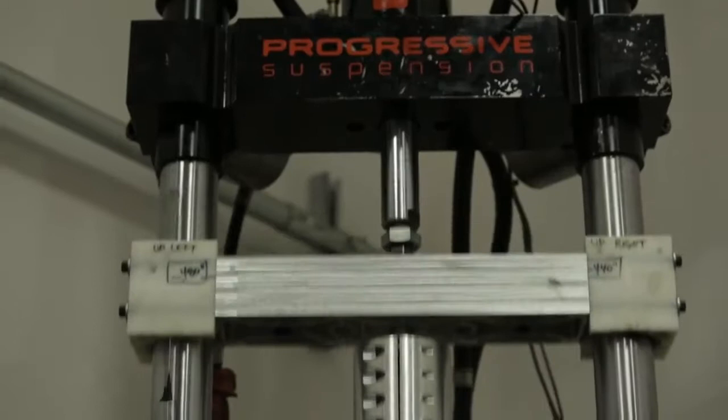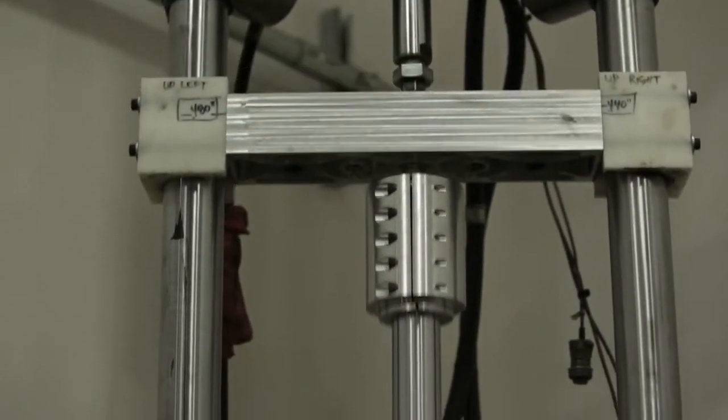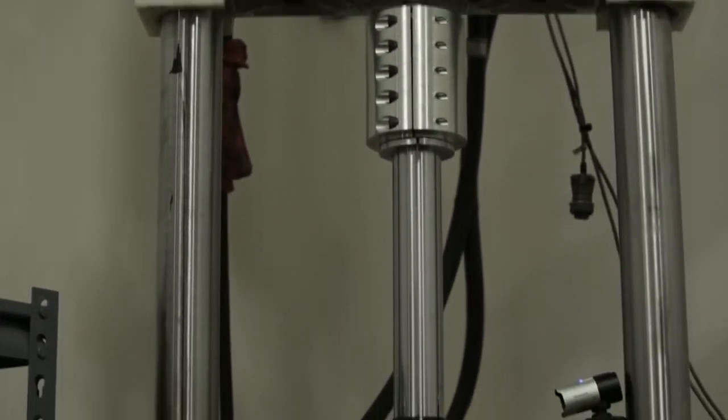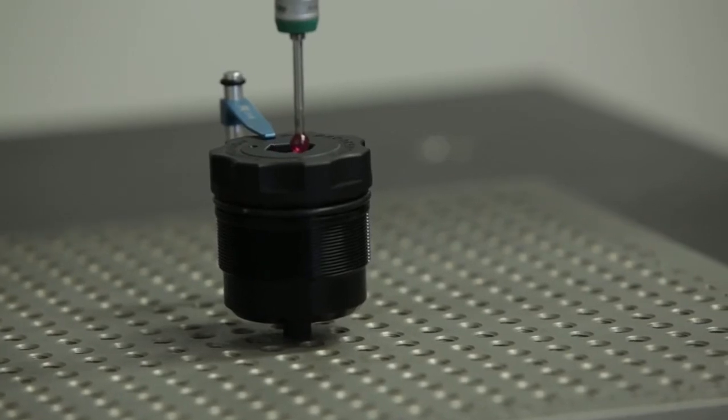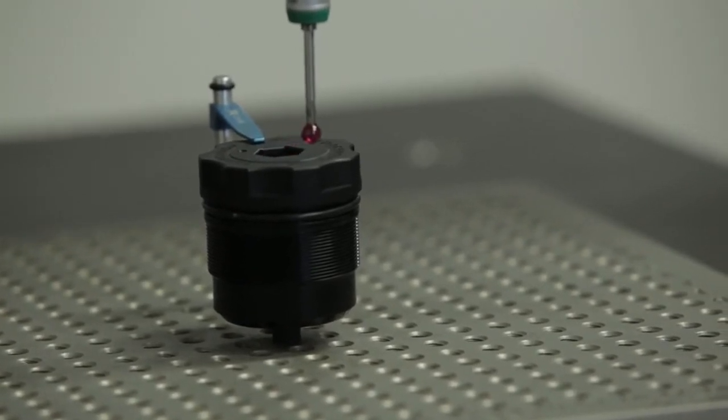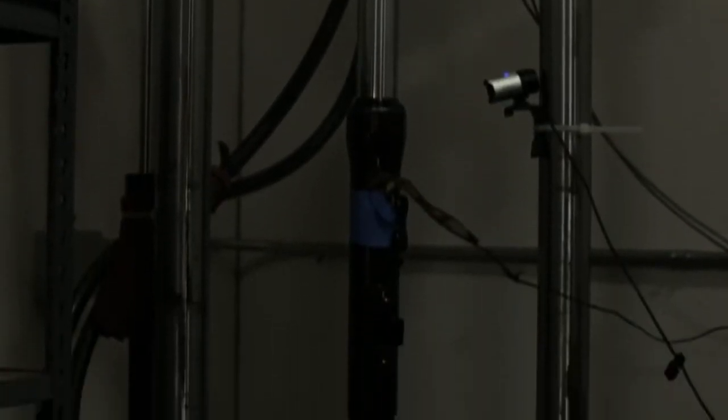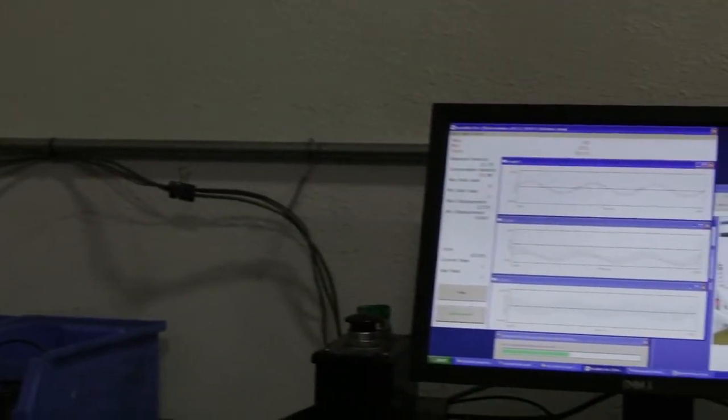The Progressive Suspension Research and Development Department uses dyno tests and digital data acquisition to gather information. That information measures real-world physical conditions while converting results into data that helps the team ensure that they are delivering the highest quality products.